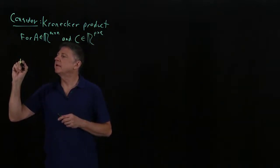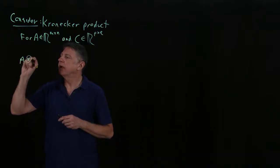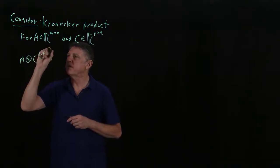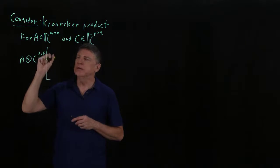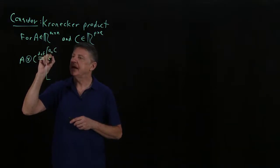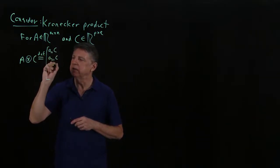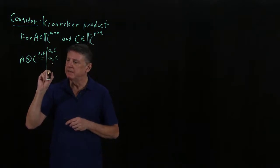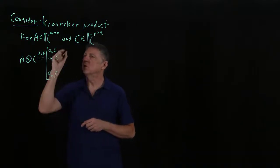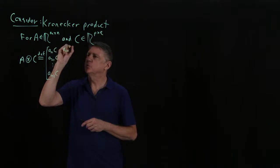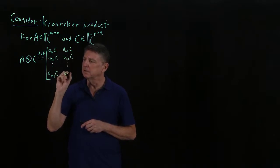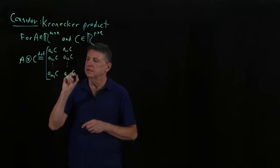We'll define the Kronecker product of A — denoted with a cross inside a circle — times C. What we do is take the scalar A₁₁ and multiply it by C, then take A₂₁ and multiply it by C, and so on until we have completed that column.